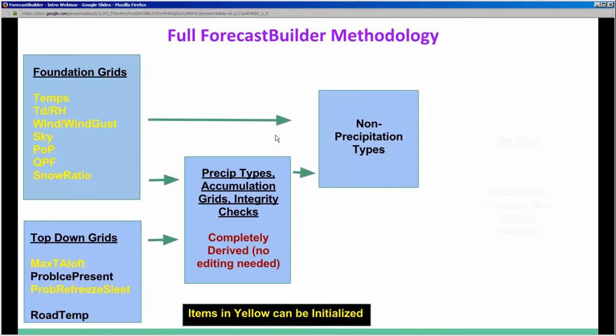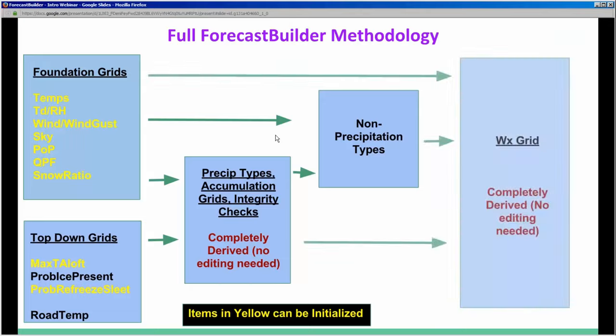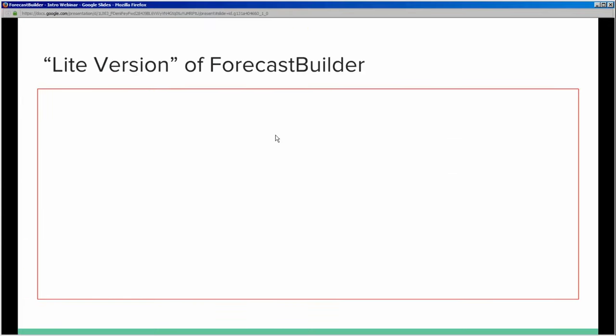The next step in the full methodology is non-precipitation types, most important for the weather grid. These include fog, frost, thunder, spray for applicable areas, blowing snow, and even smoke. Once those component grids are created, the weather grid is completely derived — no direct editing. It comes from the non-precipitation types combined with the foundation grids and the adjustments made in collaboration with neighbors. This ensures internal consistency throughout the entire database.